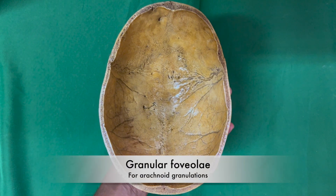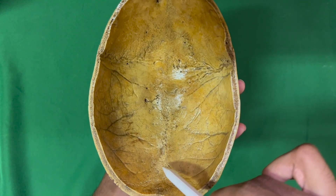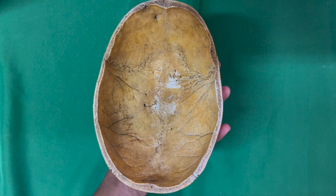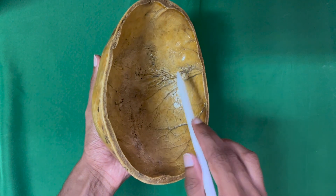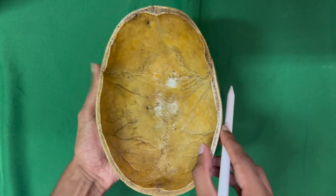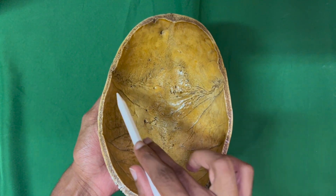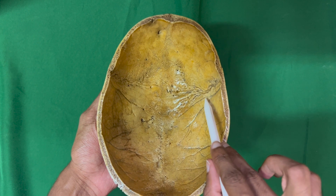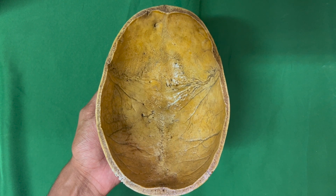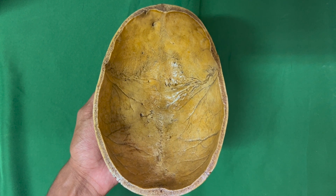The granular foveoli are deep, irregular and large pits situated on either side of the sagittal sulcus, formed by arachnoid granulations. The groove for the anterior branch of the middle meningeal artery and the accompanying vein runs upwards 1 cm behind the coronal suture. Smaller grooves for branches arising from both the anterior and posterior branches of the middle meningeal vessels run upwards and backwards over the parietal bone. The impressions for cerebral gyri are less distinct, but become very prominent in cases of raised intracranial pressure.